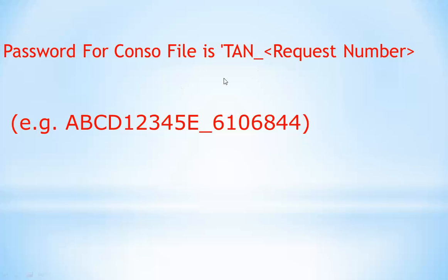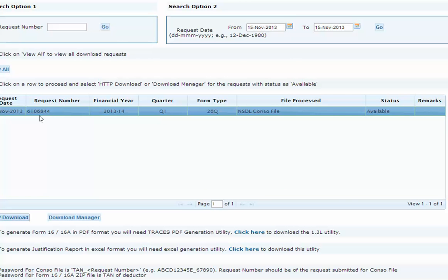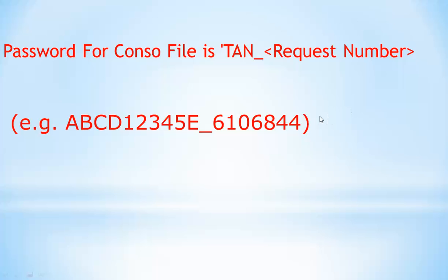To open the password-protected zip file, the password format is: your TAN number in capital letters (caps lock on), then an underscore, then the request number. For example, in my case my TAN number is ABCD12345E, then underscore, then the request number - say 6106844. Once you enter that password, the file will open and will be available for filing your TDS correction statement and making other required changes.